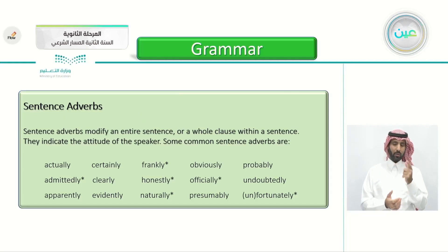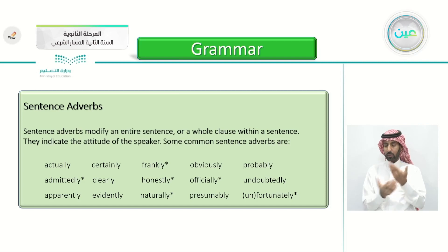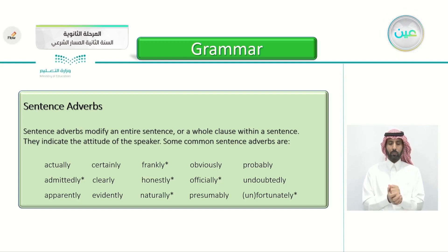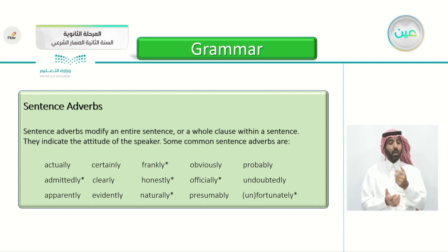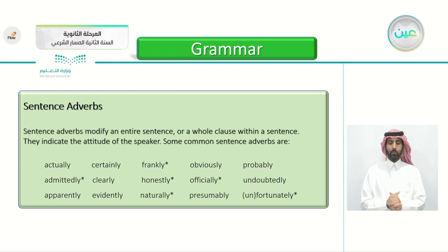Now, sentence adverbs. Sentence adverbs modify an entire sentence or a whole clause within a sentence. They indicate the attitude of the speaker. Some common sentence adverbs are: actually, certainly, frankly, obviously, probably, admittedly, clearly, honestly, officially, undoubtedly, apparently, evidently, naturally, presumably, fortunately, and unfortunately. Sentence adverbs modify the entire sentence — not just one word or two — and they are related to the attitude of the speaker, the person who is saying it.